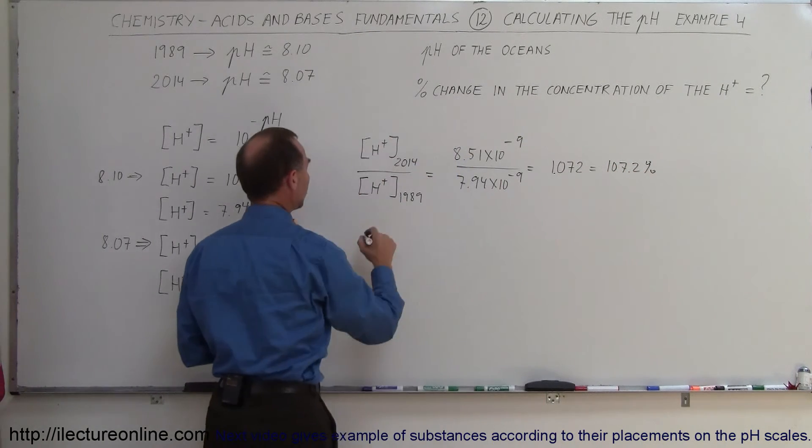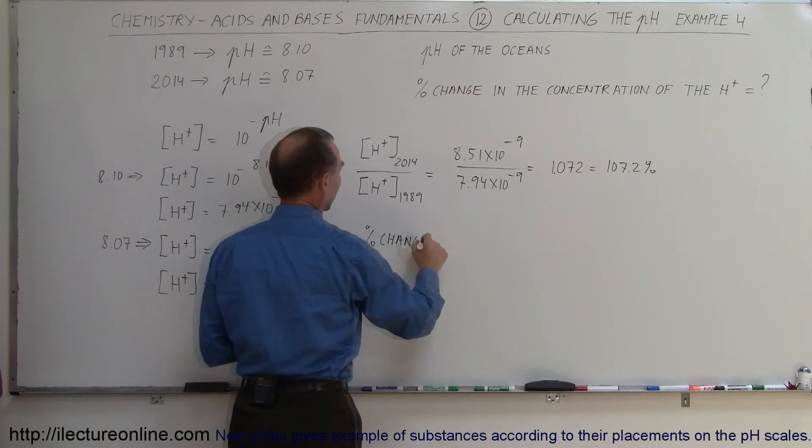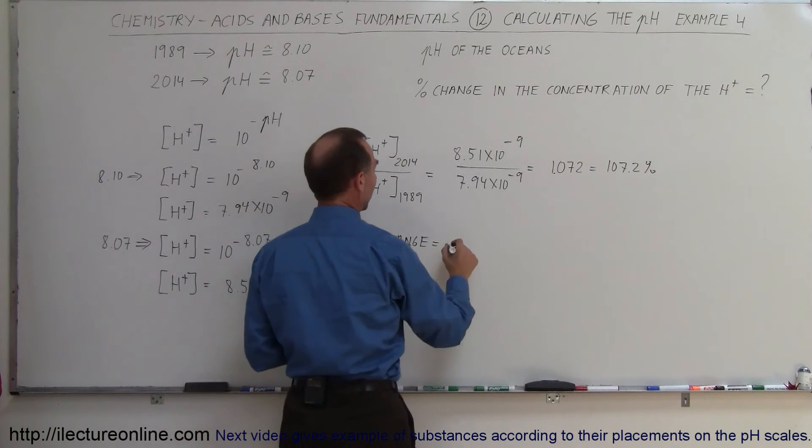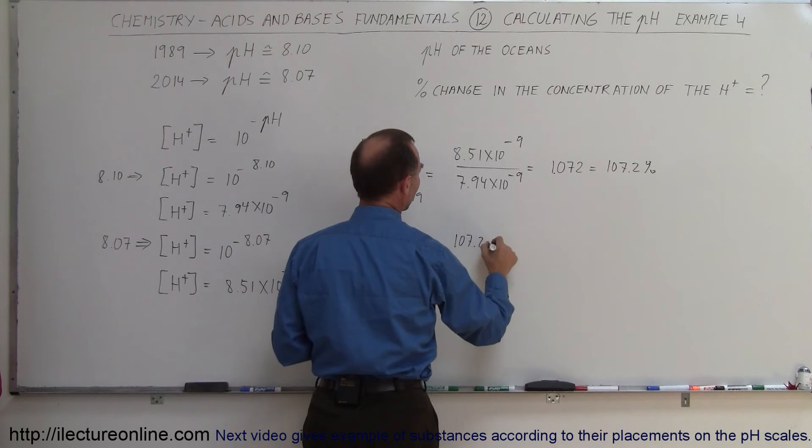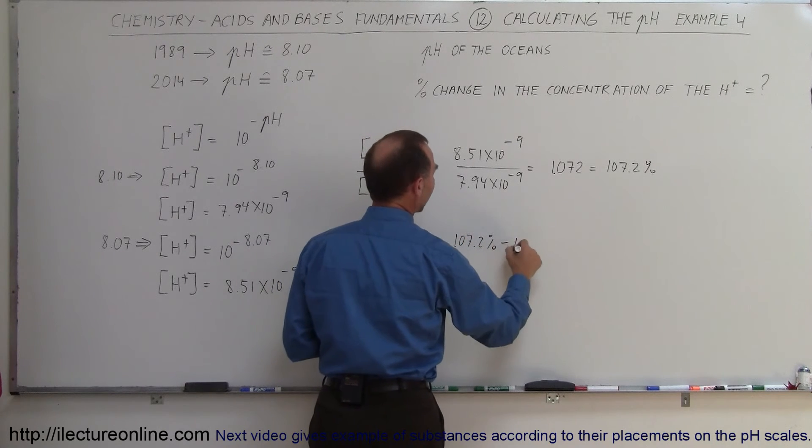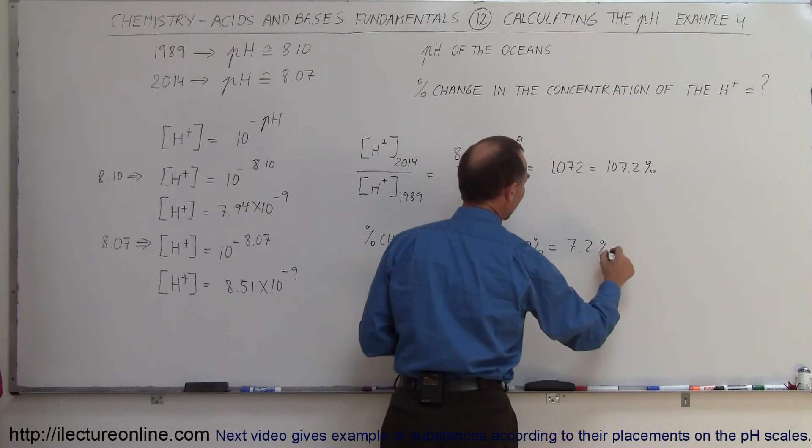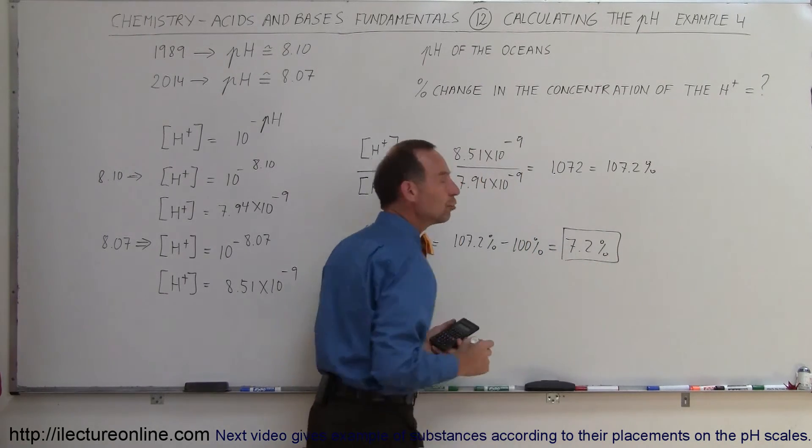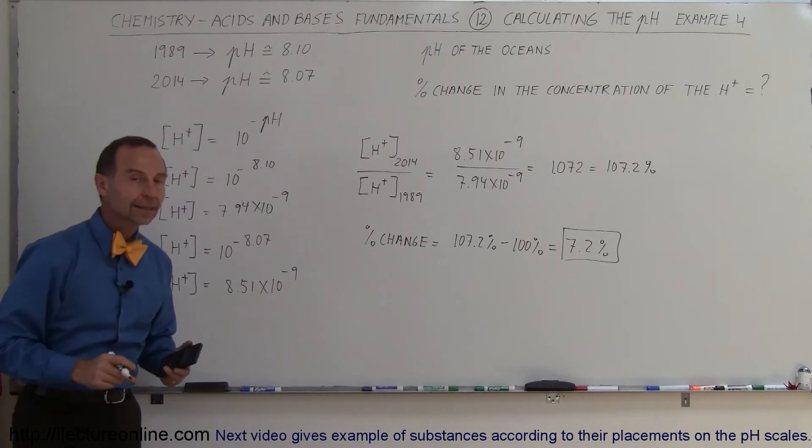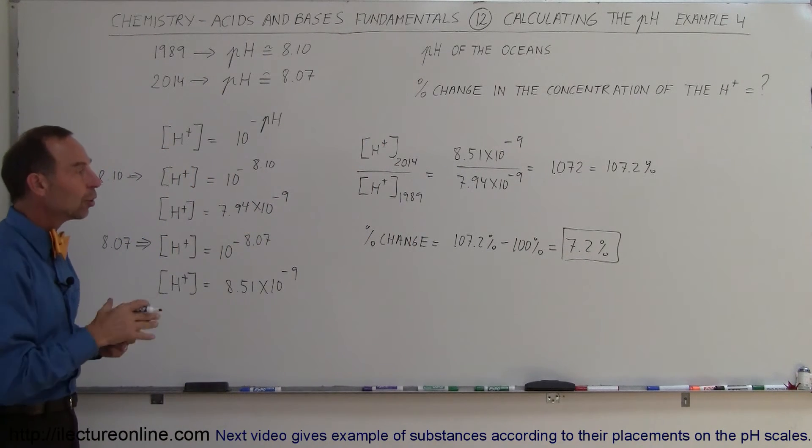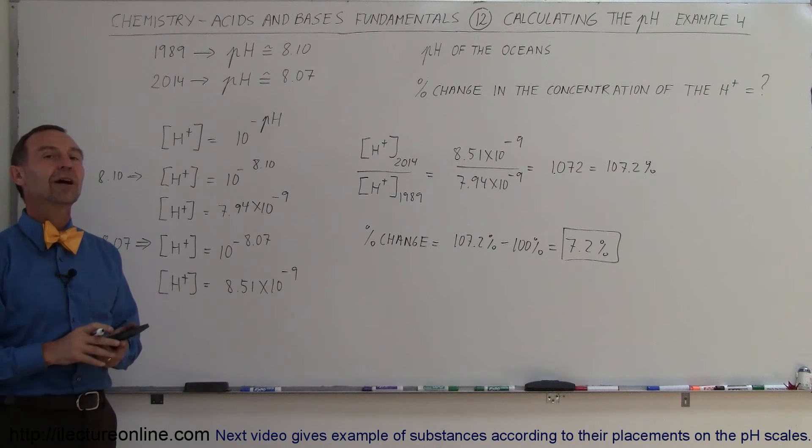Which is 107.2%. So the percent change is equal to 107.2%, what it is today, minus the 100%, what it was 25 years ago, or 7.2%. So there's been about a 7.2% change in the concentration of the hydrogen ion in the oceans over the last 25 years or so.